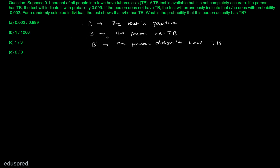Now let's look at the information given in the question. It says 0.1% of all people in a town have TB. This is a classic mistake many students make — this does not imply that probability of B is 0.1. It is actually 0.001. So the correct probability of B is 0.001, and that is what you have to work with.